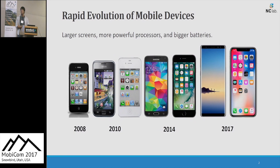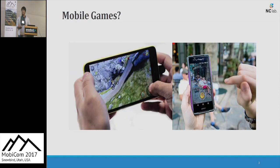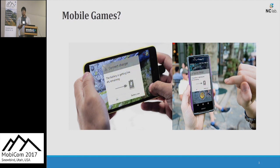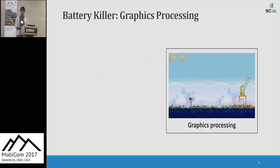In these days, mobile devices are rapidly evolving. They are equipping larger displays, more powerful processors, and bigger batteries. Also, mobile games are evolving with better graphics quality and enhanced interactivities. But still, we cannot enjoy mobile games long enough. Why? The main reason is heavy graphics processing. For better graphics, modern mobile games use more power for processing.